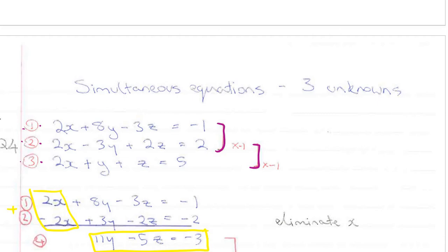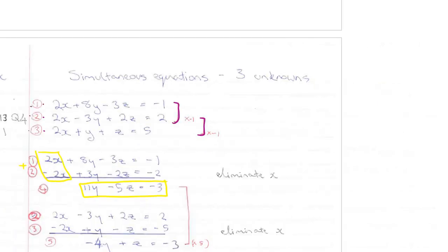Now, the aim is to create another equation in y and z, and we repeat the process by eliminating another variable. Now, I am going to go back up to here, and I am going to take equation 2 and 3, and I am going to multiply equation 3 by minus 1.